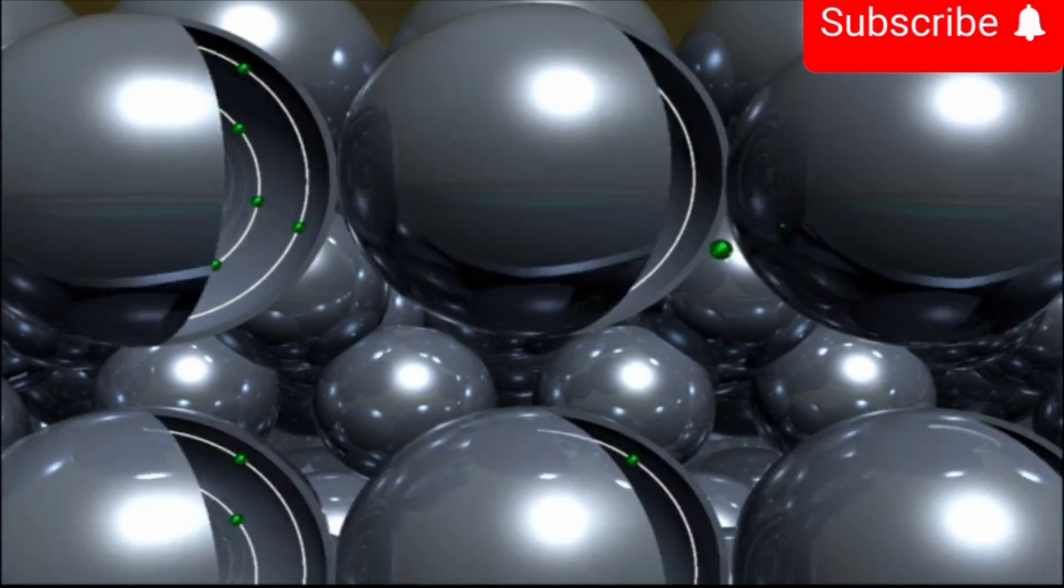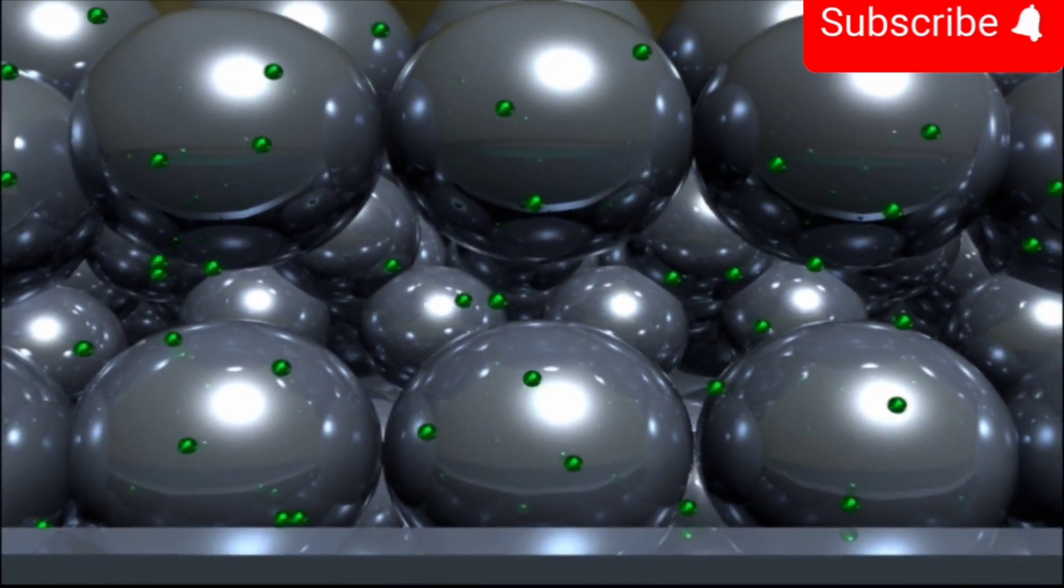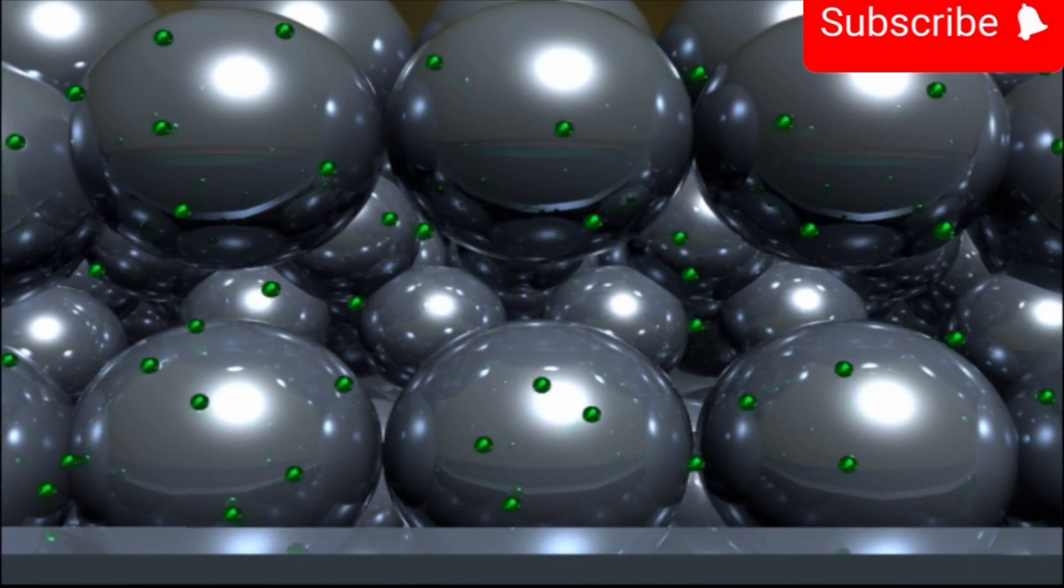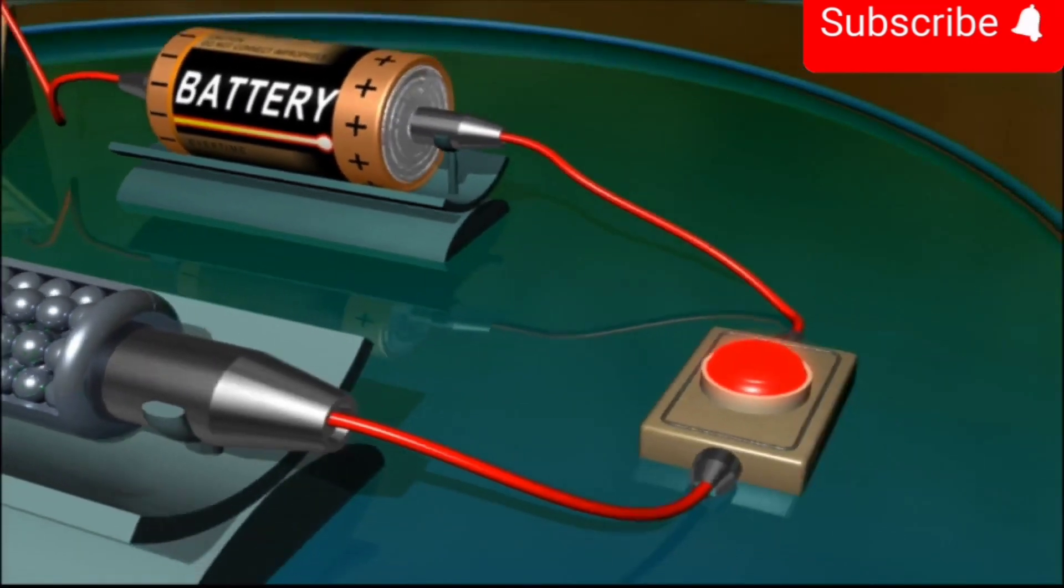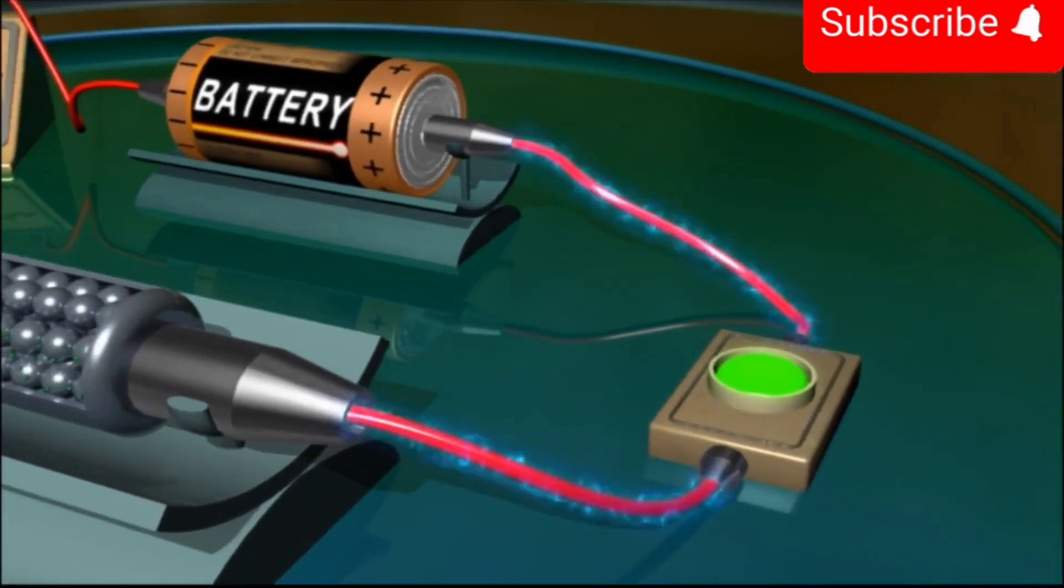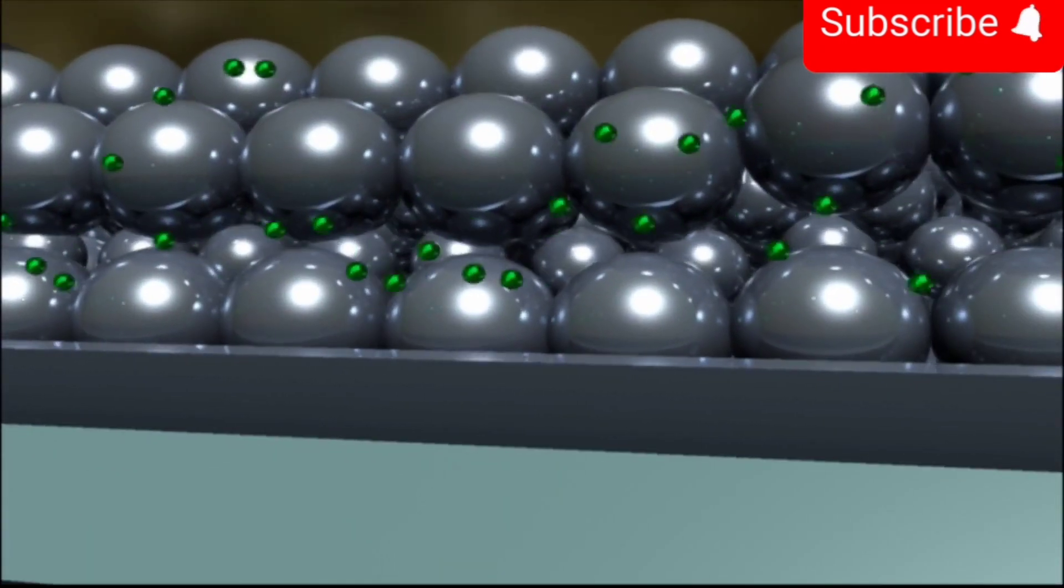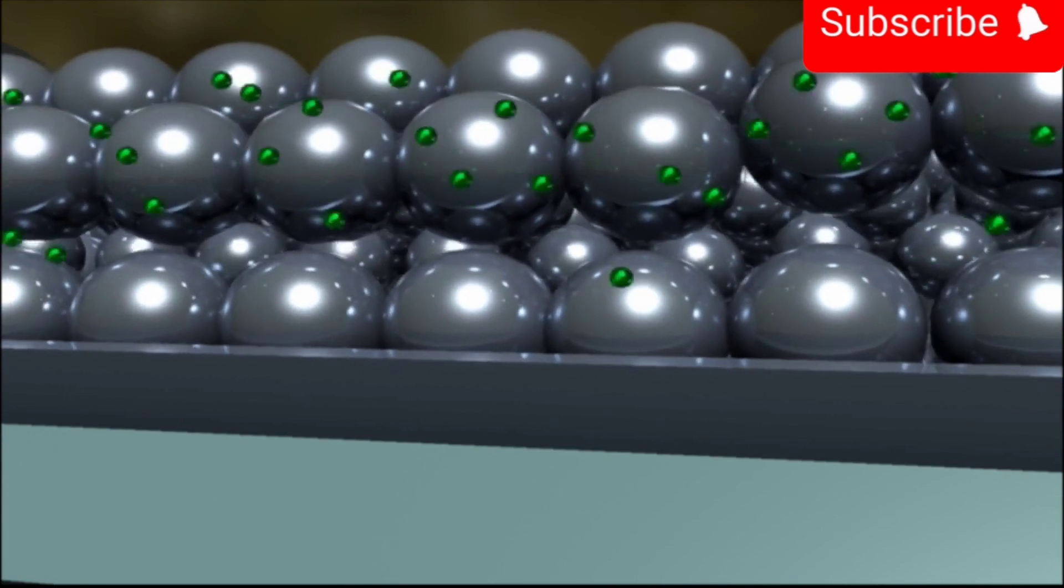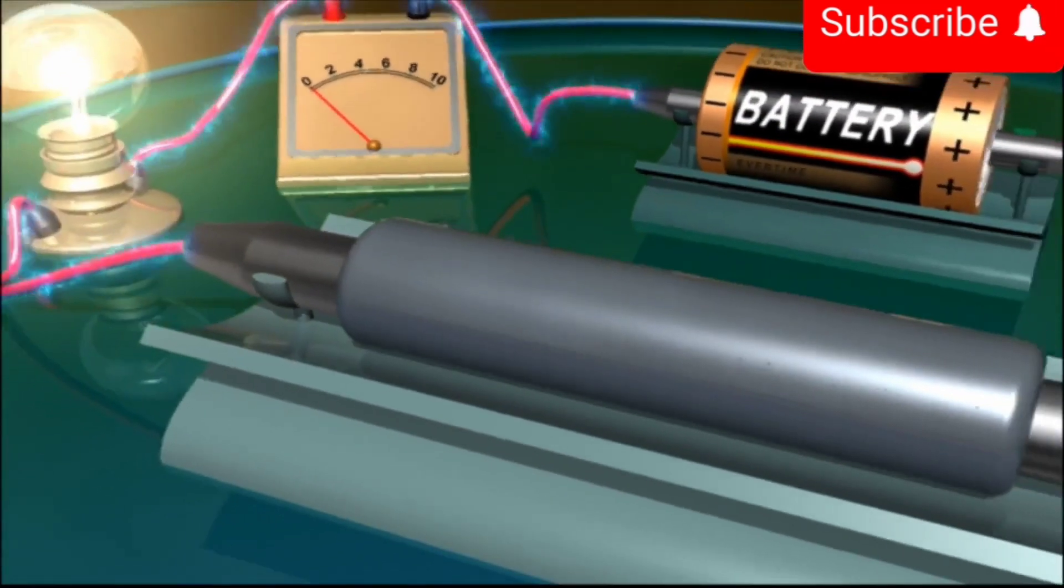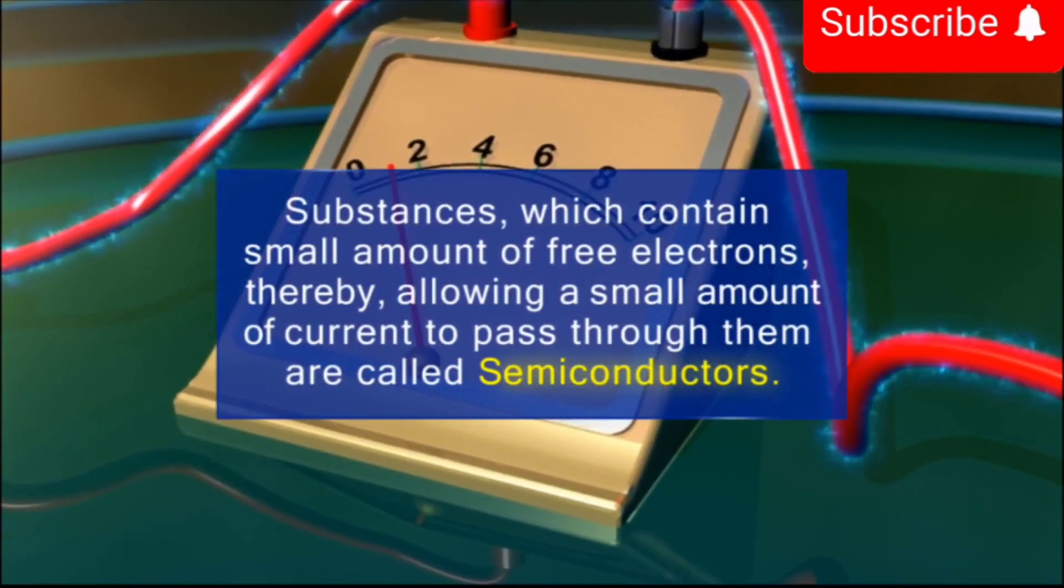Due to this, silicon contains a small number of free electrons. On applying a potential difference across the ends of this rod, the small number of free electrons available start drifting in a particular direction. They constitute a small amount of current which can be detected by a sensitive current meter.